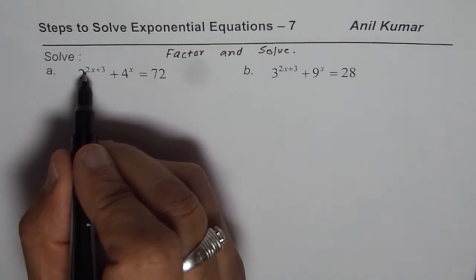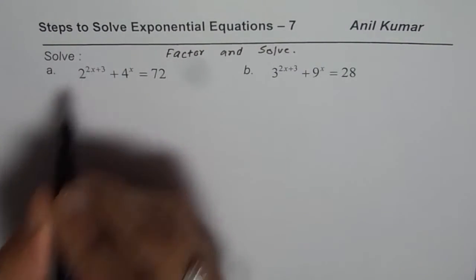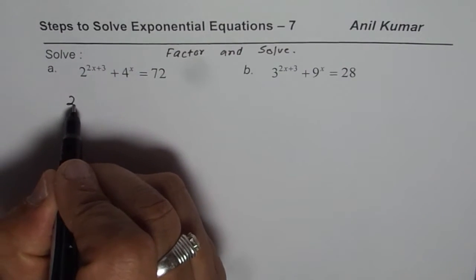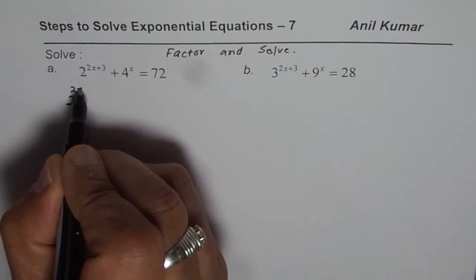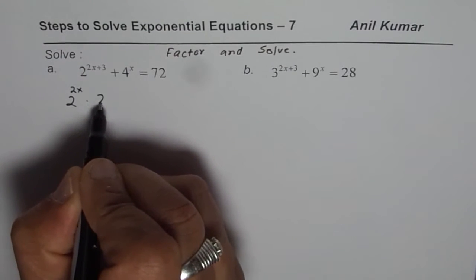Now 2 to the power of 2x plus 3, it means what? It really means it could be written as 2 to the power of 2x times 2 to the power of 3.